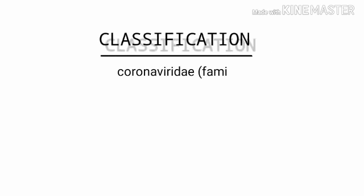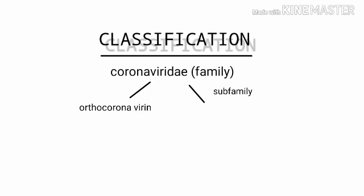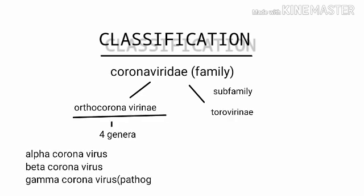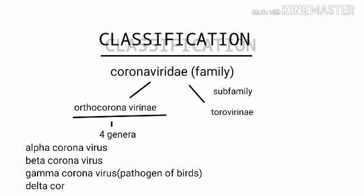Classification. The coronavirus family is divided into two subfamilies: Orthocoronavirinae and Torovirinae. Orthocoronavirinae is furthermore divided into four genera.